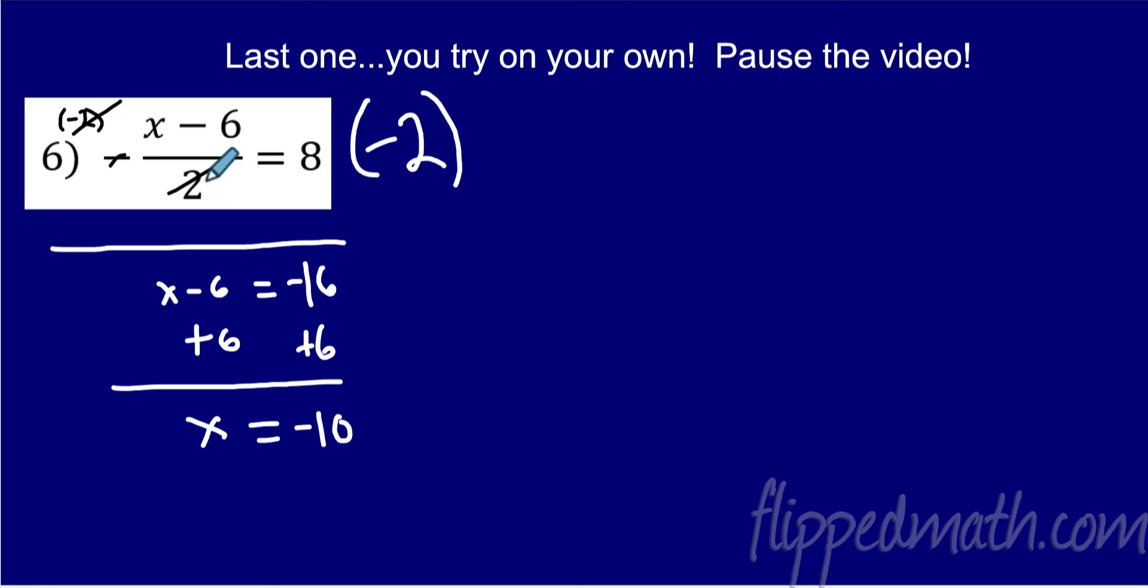Okay, let's see what we got. So I was dividing by, I had grouping of x minus 6, and I had divide by negative 2. So I started by multiplying by negative 2. That gave me x minus 6 is negative 16. I added 6 to both sides. Negative 16 plus 6 is negative 10.